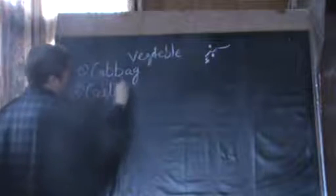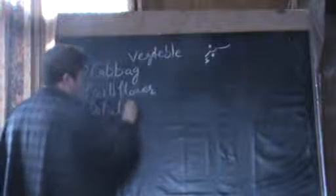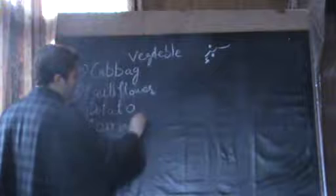In Kashmiri we call vegetables 'Sabzi.' The first vegetable I will introduce is cabbage. The second one is cauliflower. And then we have potato and spinach. You can also correct your pronunciation of English words, so be very careful while pronouncing the words in Kashmiri as well as in English.